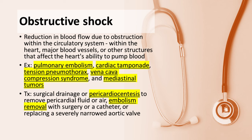Examples of obstructive shock include pulmonary embolism, cardiac tamponade, tension pneumothorax, vena cava compression syndrome, and mediastinal tumors. Definitive treatment depends on the underlying cause and may include surgical drainage or pericardiocentesis to remove pericardial fluid or air, removal of an embolism with surgery or a catheter, or replacing a severely narrowed aortic valve.